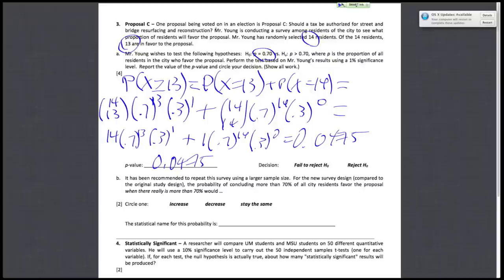So after you find your p-value, you have to decide whether or not you want to reject the null hypothesis, h-naught, or fail to reject. So note that in this problem the significance level is 1% instead of the usual 5%. And because your p-value is greater than 1%, in this case we would fail to reject the null hypothesis. So that would be our decision.